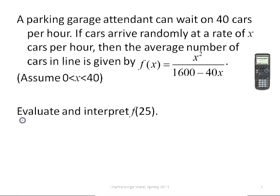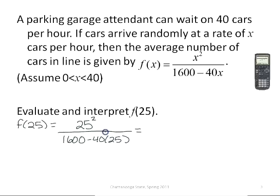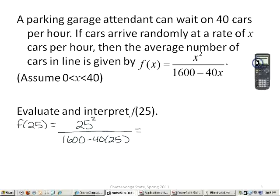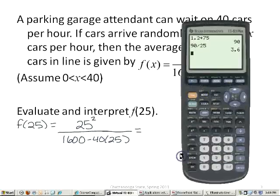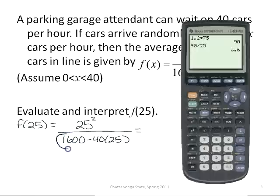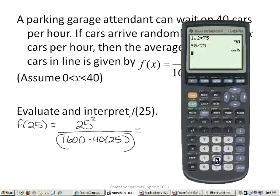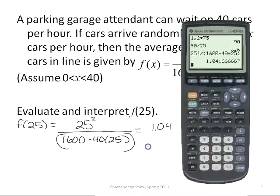What we want to do is evaluate and interpret f of 25. So if I put in a value of 25 for my x, I'm going to have 25 squared over 1600 minus 40 times 25. Now, I did the last problem in the calculator by doing it in two steps. Remember, you also could evaluate this in the calculator in one step by enclosing your denominator in parentheses. So I can do 25 squared divided by parentheses 1600 minus 40 times 25. This gives me 1.04.